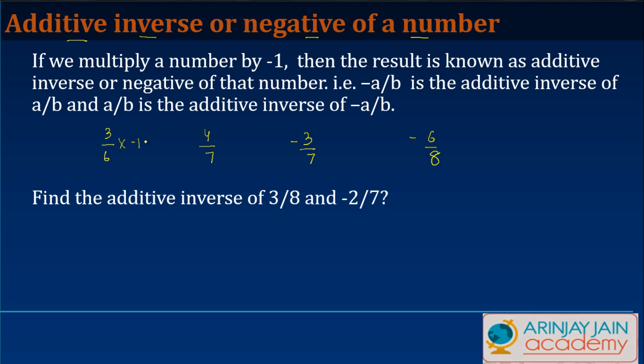The result that you get is known as the additive inverse or negative of that number. So when I multiply this by -1, I get -3/6. So we say -3/6 is the additive inverse or negative of 3/6.